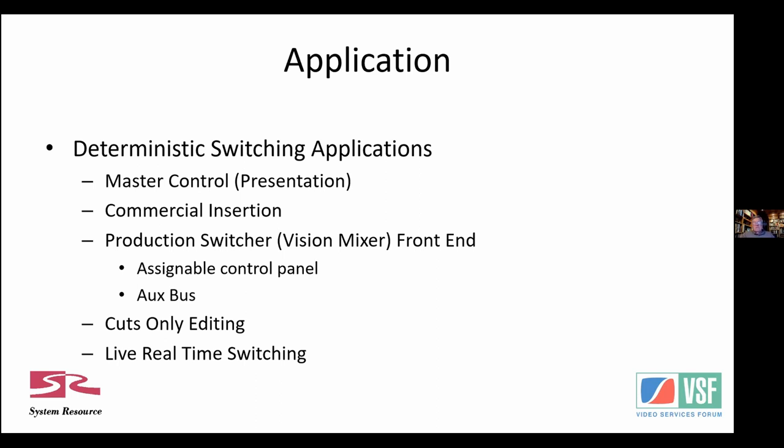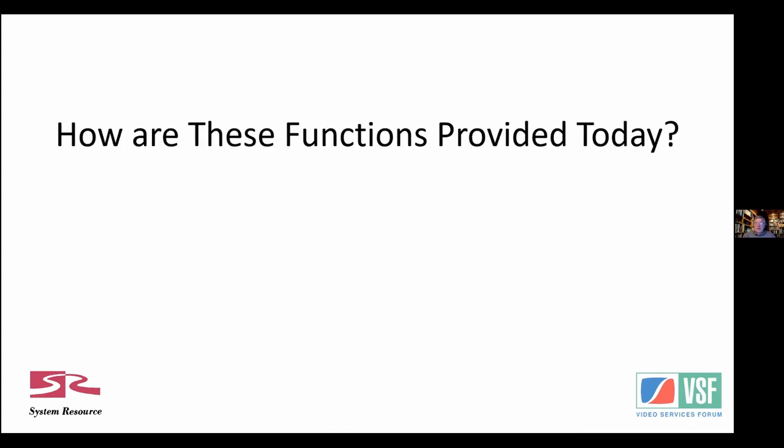In production switchers, selecting the actual sources to look at and process in a vision mixer - whether on an assignable control panel or an aux bus feeding a DVE - these all require deterministic switching. During cuts-only editing you could do that, and editing is very definitive as far as frames and the actual location in the stream. And then there's live real-time switching. These are the applications and workflows that historically have required deterministic switching.